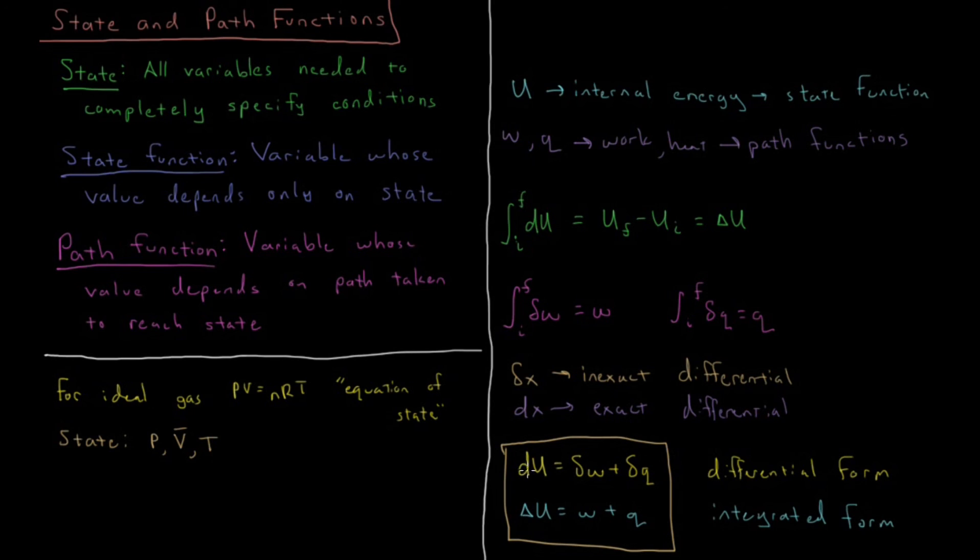So any infinitesimal change in energy must be the sum of the change in work and the change in heat, and any change in energy between the initial and final states must be the work done plus the heat done during that process. This is our conservation of energy for a closed system—our energy must be accounted for between heat and work when these are the only two processes which can exchange energy between the system and surroundings. Thank you for listening.